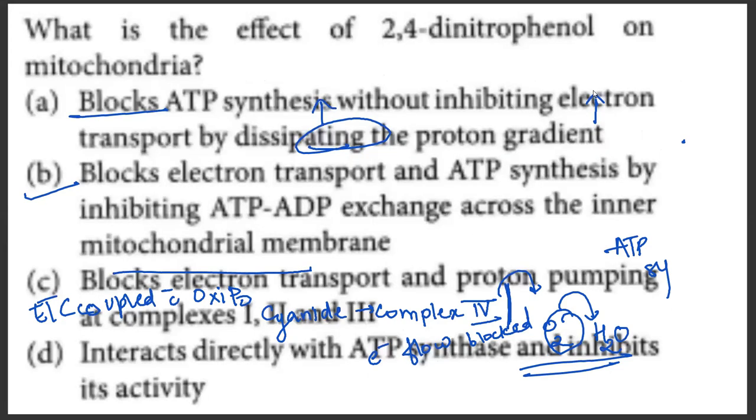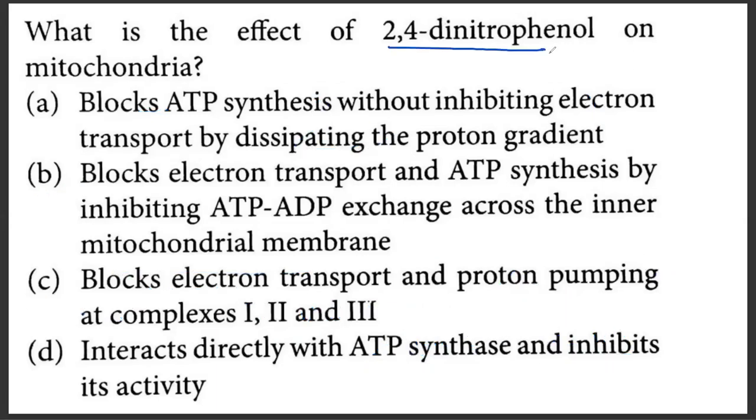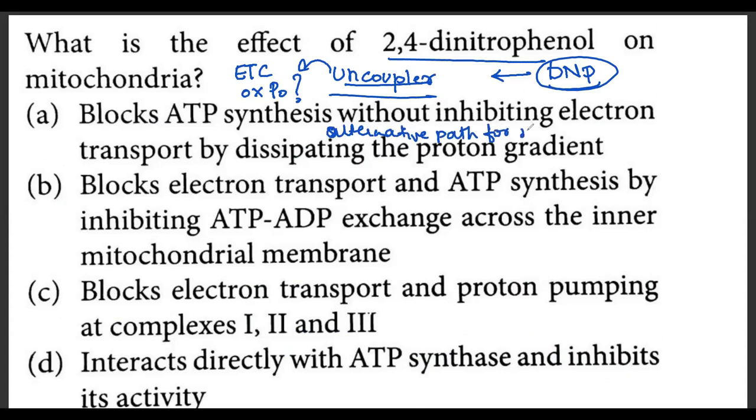Moving on to the next question. What is the effect of 2,4-DNP on mitochondria? 2,4-DNP, dinitrophenol. If you remember distinctly, 2,4-dinitrophenol is an uncoupler. What an uncoupler does is it basically uncouples ETC from oxidative phosphorylation. How? It does so by providing an alternative path for H plus to enter back into the matrix.